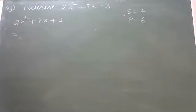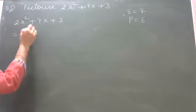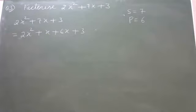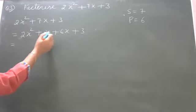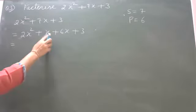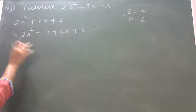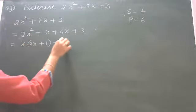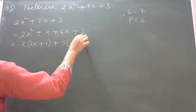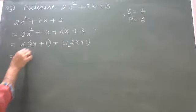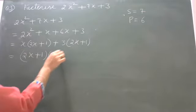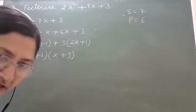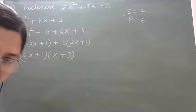Product should be 6 and sum should be 7. So we split the middle term: 2x square plus x plus 6x plus 3. The product of the two numbers is 6 and their sum is 7. Taking x common from first two terms: x into 2x plus 1, and 3 common from last two: 3 into x plus 1. So the factorization is 2x plus 1 into x plus 3.